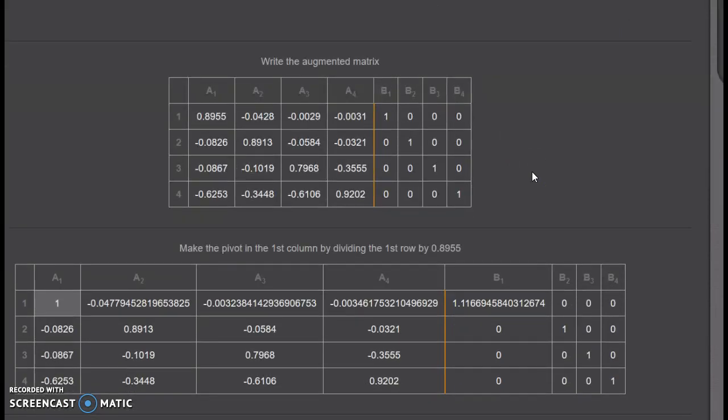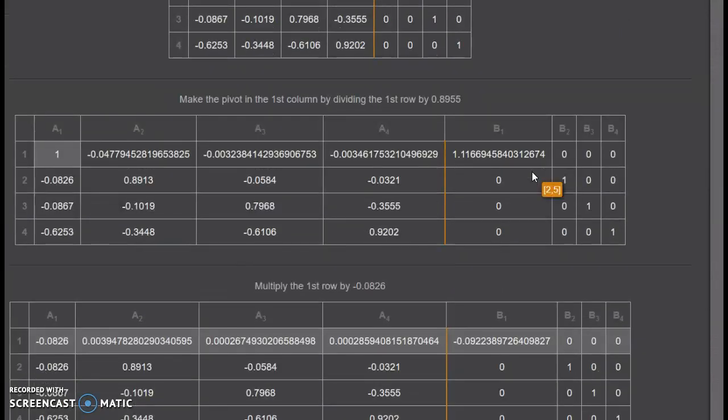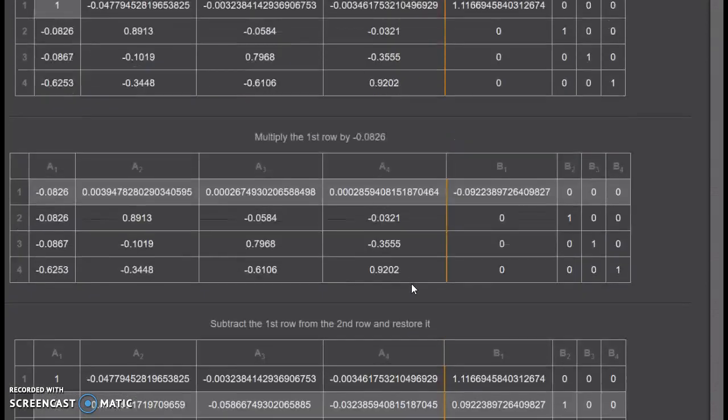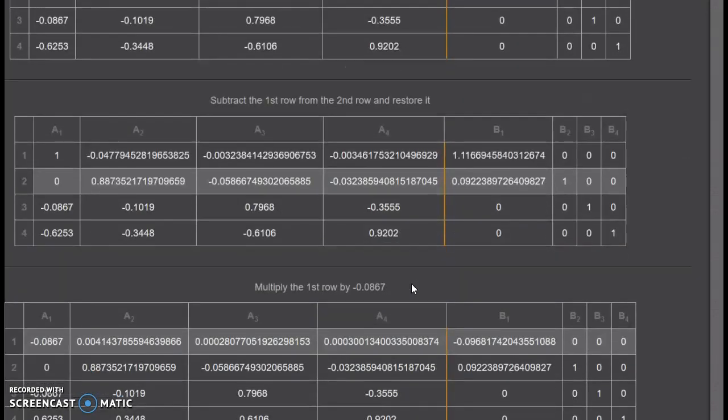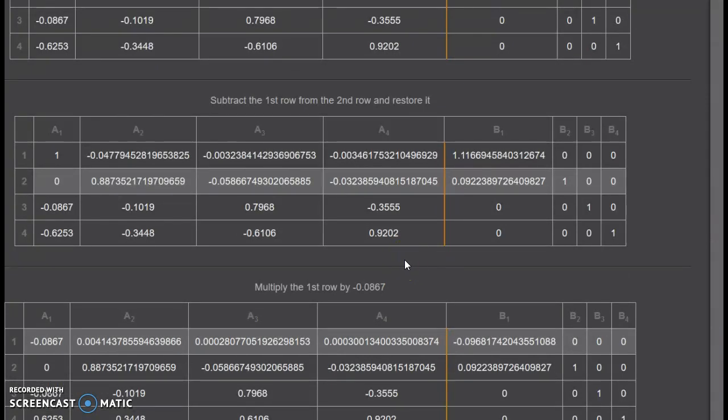Then it tells us that we need to write the augmented matrix and begin using our pivot point, knowing that we need one here in our diagonal and zeros in the remaining. It tells you exactly what steps they did to get from part one to part two. So that would be a great way to check your work at the beginning of these as well.